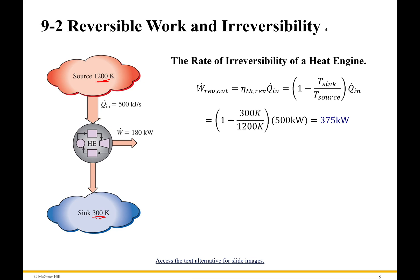And if I do that, I see I've got 375 kilowatts of power that I could have gotten out of the system if it was a perfect system. And if I take that, I can find my irreversibility by asking how much work did I get out of the system versus how much work I could have gotten out of the system.